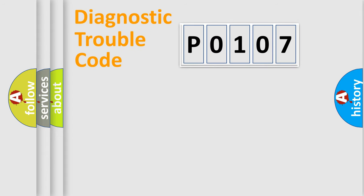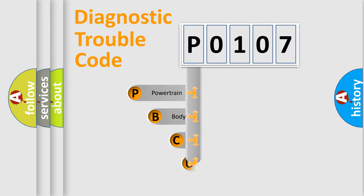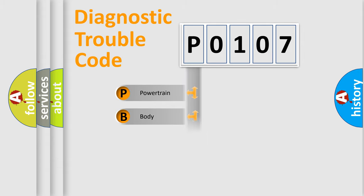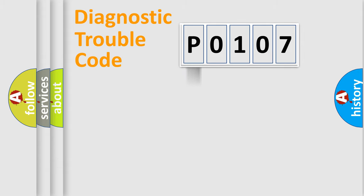First, let's look at the history of diagnostic fault code composition according to the OBD2 protocol, which is unified for all automakers since 2000. We divide the electrical system of the automobile into four basic units: Powertrain, Body, Chassis, and Network.